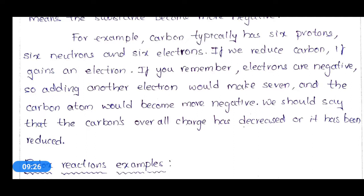If we take carbon as an example: it has six protons (6P), six neutrons (6N), and six electrons (6E). On reduction, it gains an electron — one more electron is added. Electrons are negative in charge, so adding another electron makes seven electrons. With six protons, six neutrons, and seven electrons, this carbon molecule will be more negative in charge. Carbon's overall charge will be decreased, or it has been reduced.